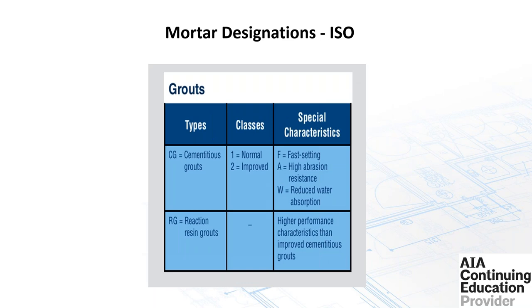ISO also has designations for grouts: CG for cementitious grouts and RG for reaction resin (epoxy) grouts. CG1 is standard and CG2 is improved, comparable to ANSI 118.7 improved latex-modified grout. Special characteristics include F for fast-setting, A for high abrasion resistance, and W for reduced water absorption. Reaction resin grouts offer high performance characteristics compared to cementitious grouts.